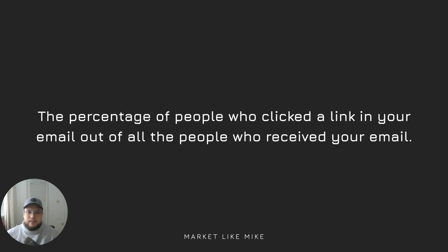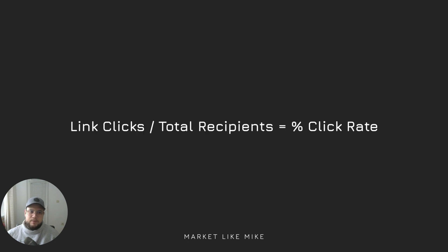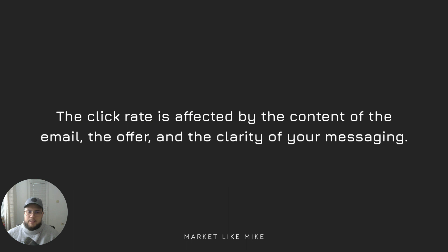The second important metric is the click rate. The click rate is the percentage of people who clicked on a link in your email out of all the people who received your email. The formula is link clicks divided by the total number of recipients, giving us the click rate in percentages. For example, if 50 people out of 500 who received the email clicked on a link, this gives us a 10% click rate.